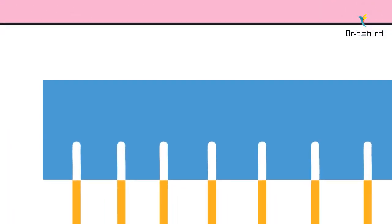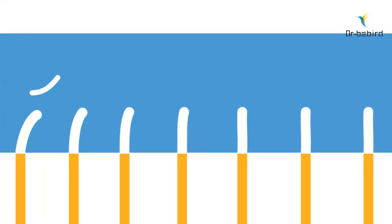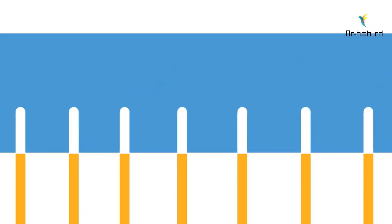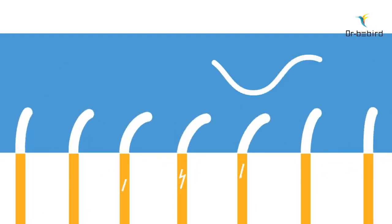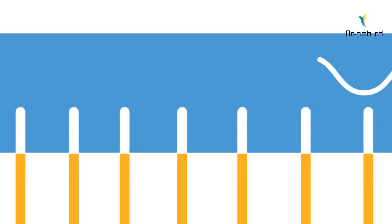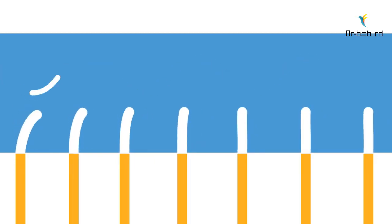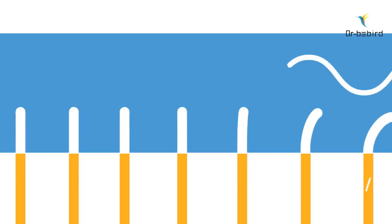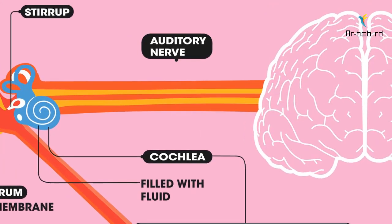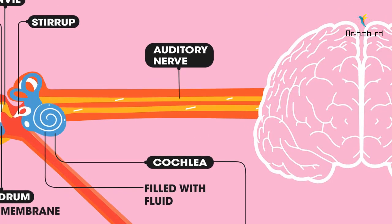It is inside the cochlea that the sound waves are transformed from vibrations into electrical impulses. When the fluid inside the cochlea vibrates, this causes the microscopic hairs to also move. This produces electrical signals which are then sent to the brain along the auditory nerve.